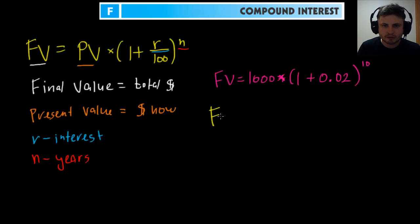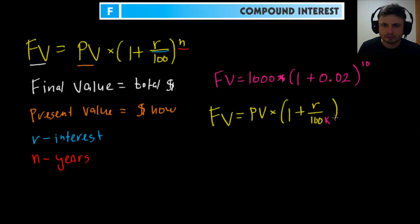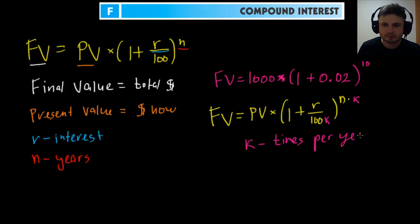When interest is compounded multiple times per year, the formula changes slightly by adding k, where k is how many times per year the interest is applied. It becomes: FV = PV × (1 + R/(100 × k))^(n × k). For monthly compounding k = 12; for biannual compounding k = 2. That's really all there is to this formula — it's not very difficult, and since it's in your formula booklet you just need to know how to use it.